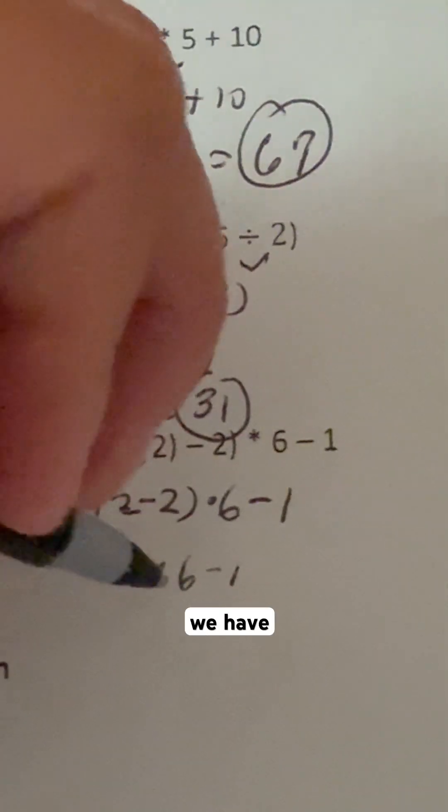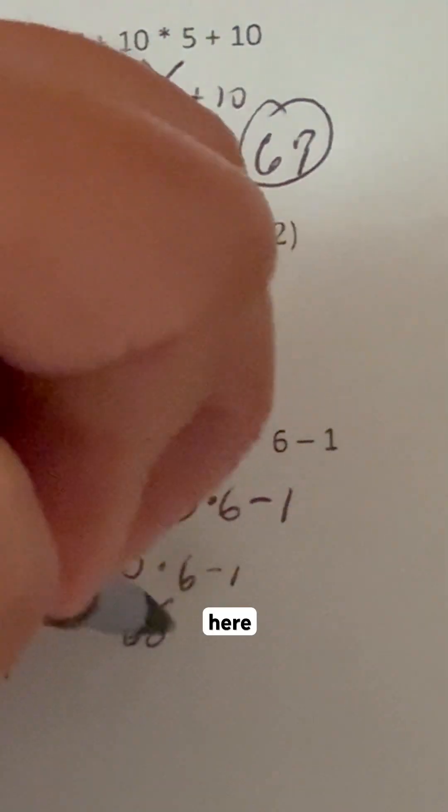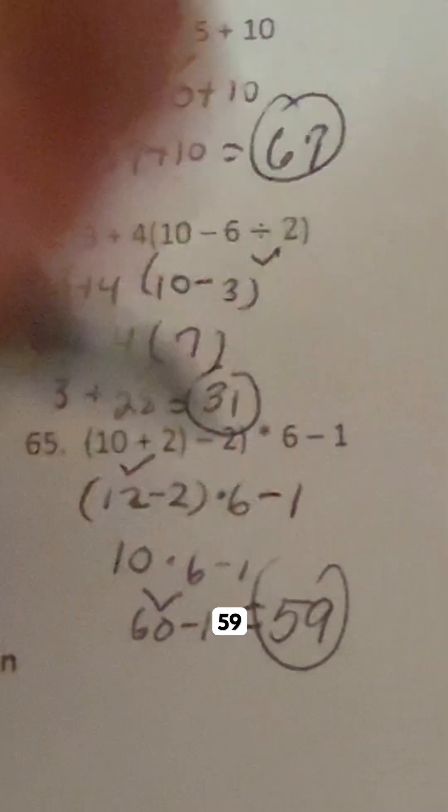And then we have times 6 minus 1. So we have 60 here minus 1, which gives me 59.